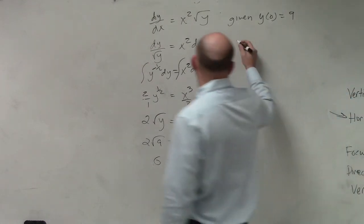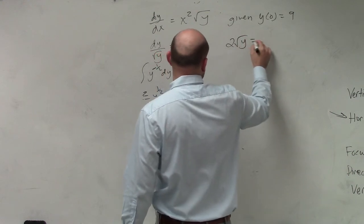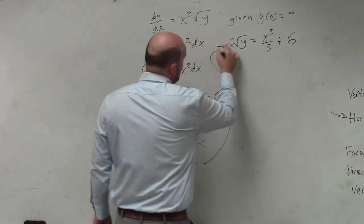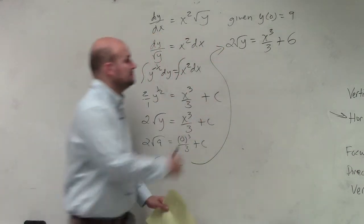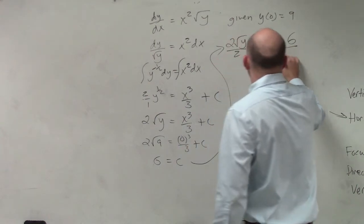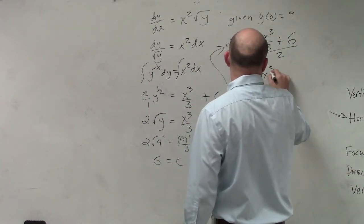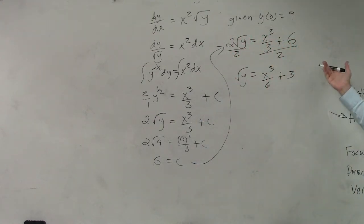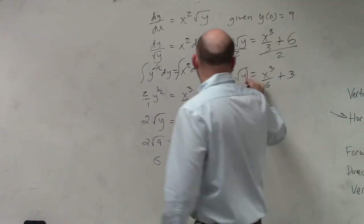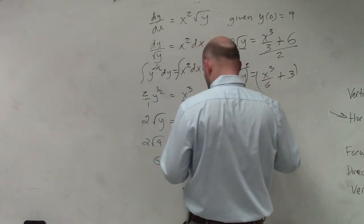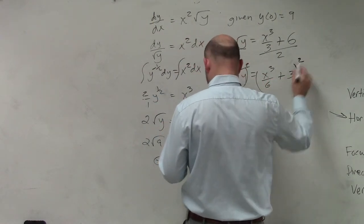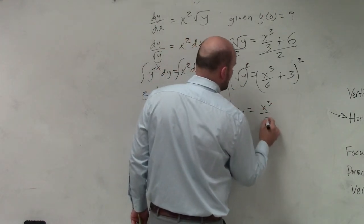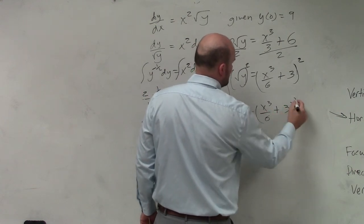So now let's go ahead and go back to 2 square root of y equals x cubed over 3 plus 6. So I'll take this up here, and I'll go from there. Now we just need to solve for y. Divide by 2, divide by 2, square root of y equals x cubed over 6 plus 3. Divided by 2 is like the same thing as multiplying by reciprocal. And then we'll square both sides. And we'll just leave it as y equals x cubed over 6 plus 3 squared.